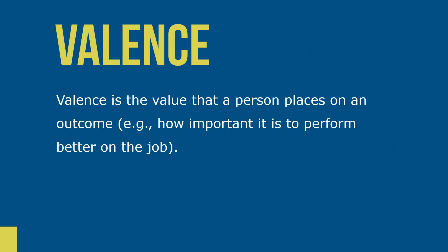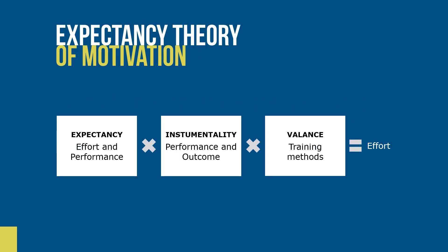Valence is the value that a person places on an outcome, like how important it is to perform better on the job. According to expectancy theory, various choices of behavior are evaluated according to their expectancy, instrumentality, and valence.